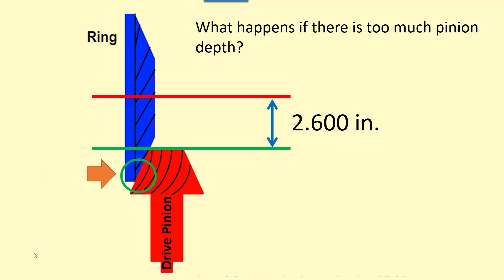The pinion depth gear teeth now make contact on the outer edge of the ring gear teeth. The outer edge of the ring gear teeth is also called the tooth heel. If we could see the contact patch on the ring gear, it would show contact high and on the heel of the ring gear tooth.